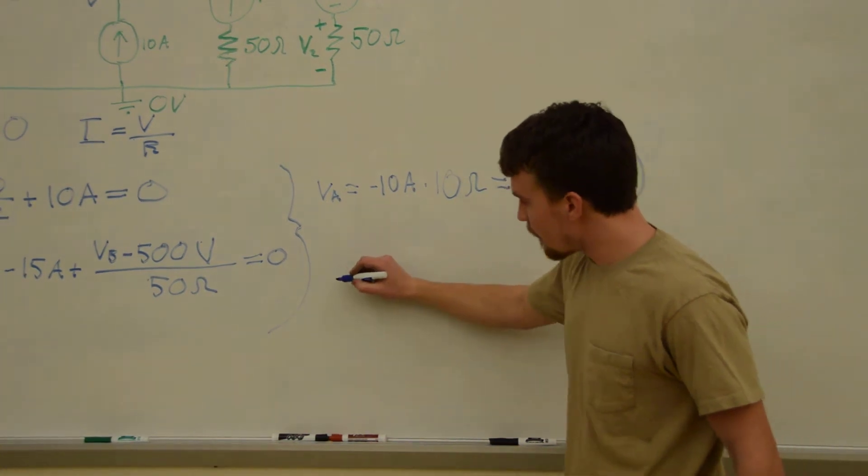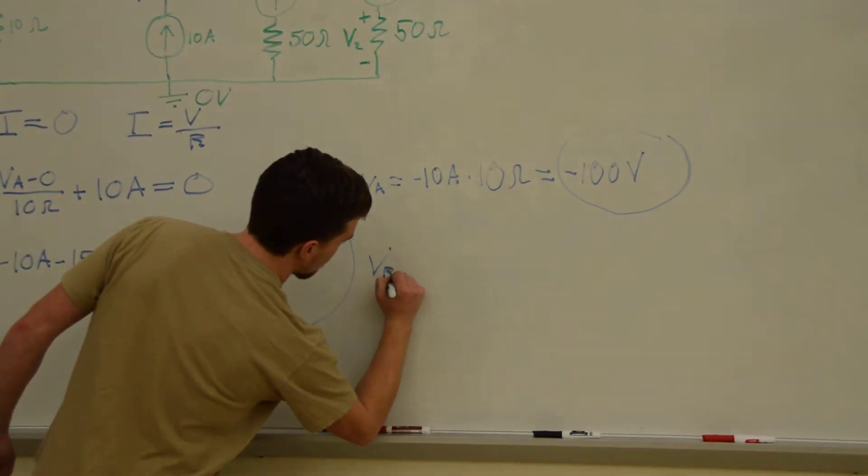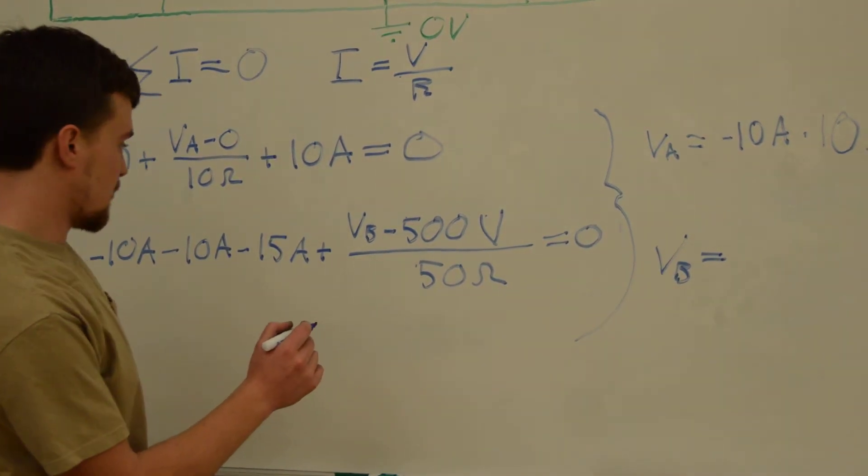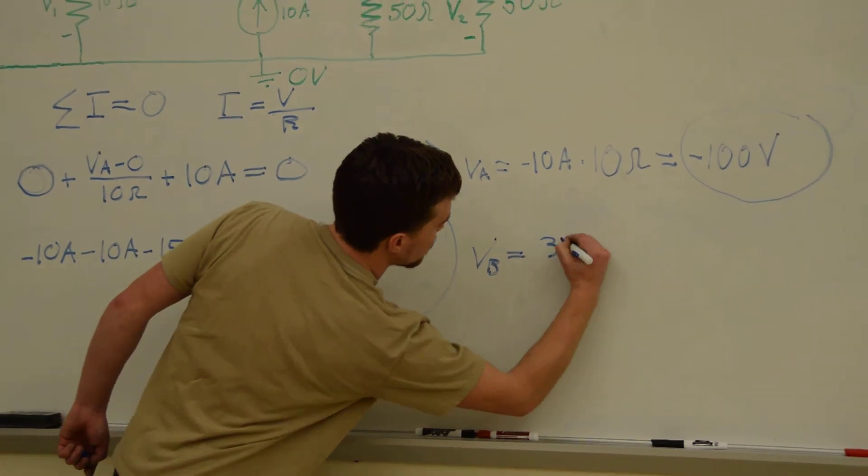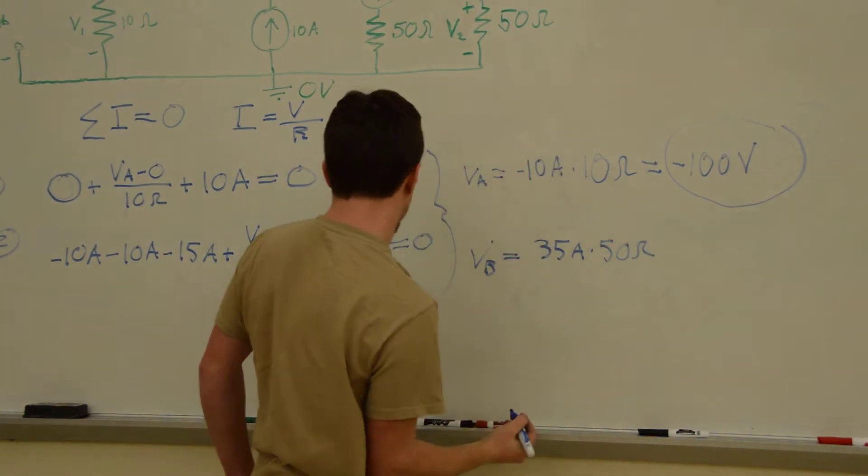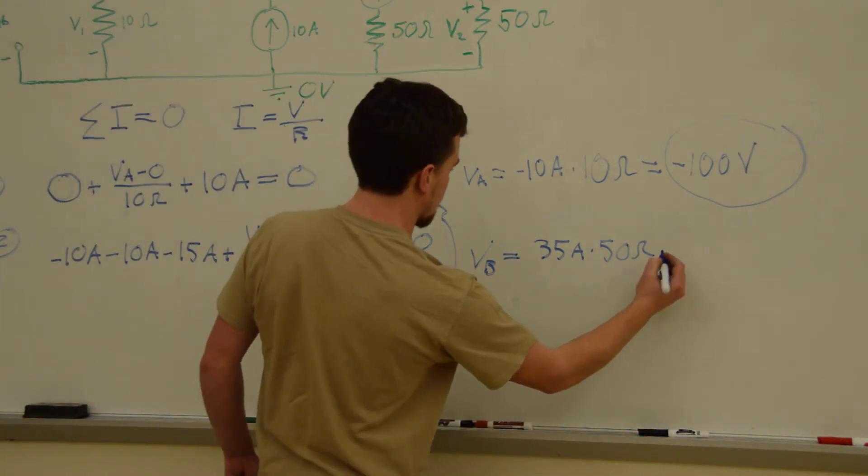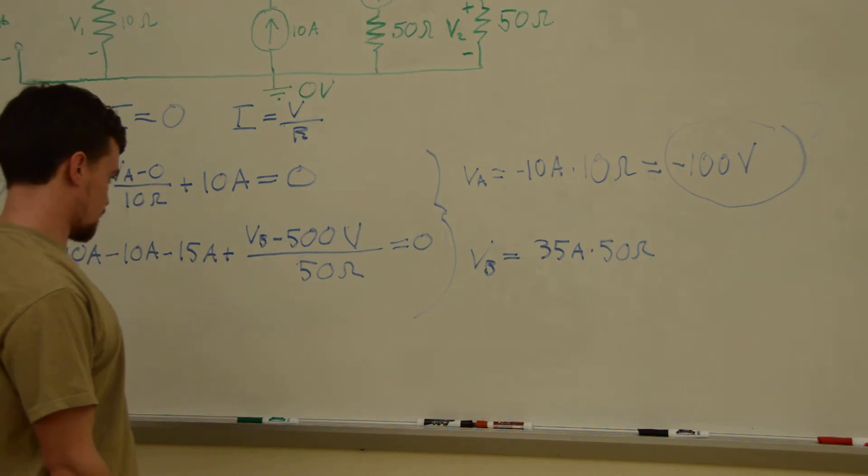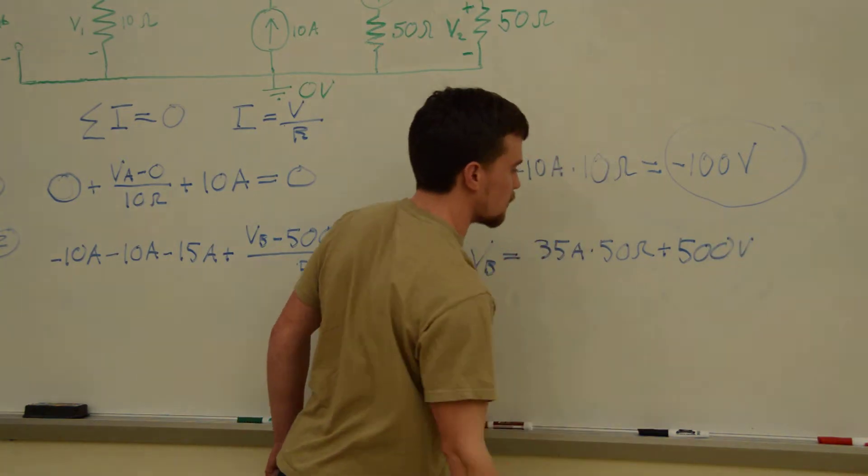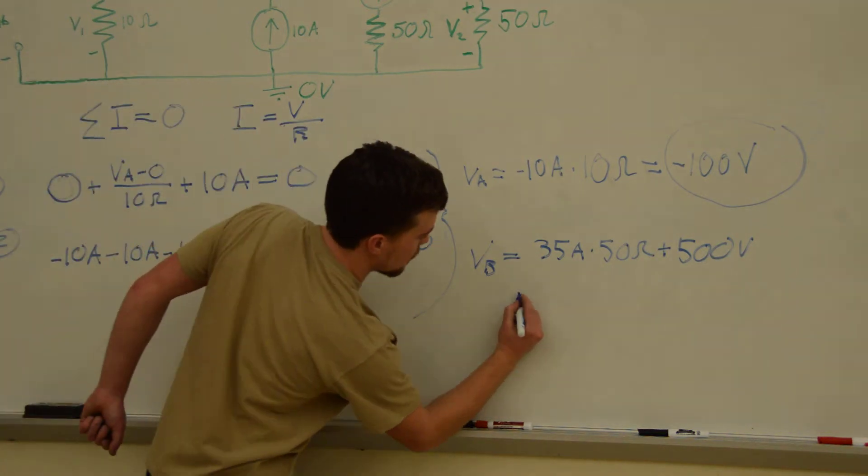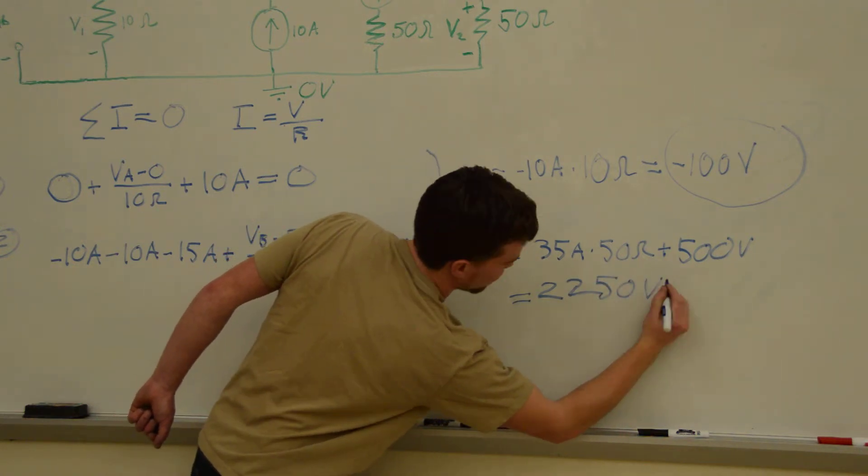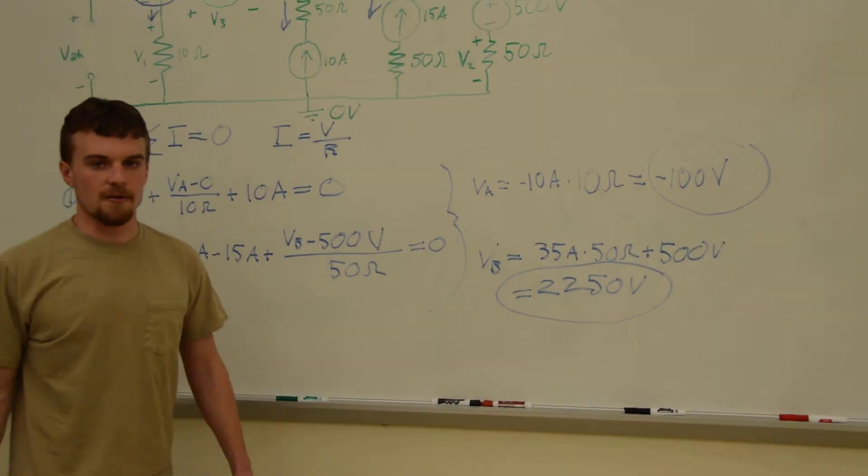Next, we will find VB using this equation. Now, if we rearrange this equation, we have VB is equal to 25 amps times 50 ohms plus 500 volts. Now, all of that is equal to 2,250 volts. That is the value of the voltage at node B.